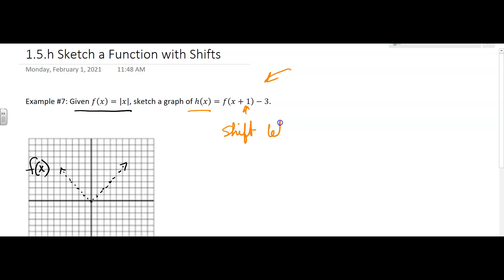Now if that's tricky for you to remember, you can think of it as f of x minus a negative 1, and then it's easier to see that it's going to go negative, it's going to go to the left.